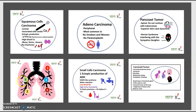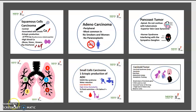To review: the first category is squamous cell carcinoma, the second is adenocarcinoma, the third is Pancoast tumor, the fourth is small cell carcinoma, and the last is carcinoid tumor.